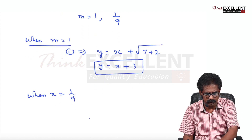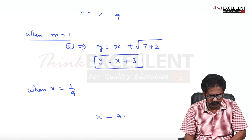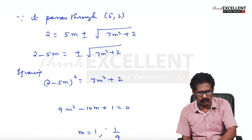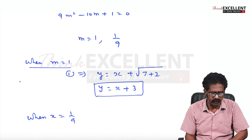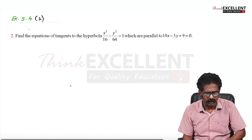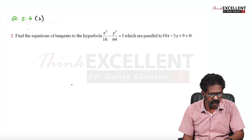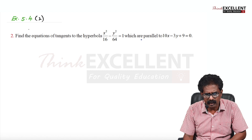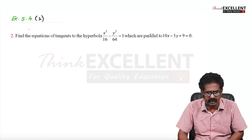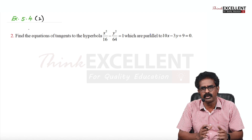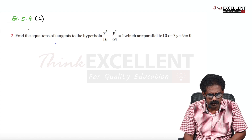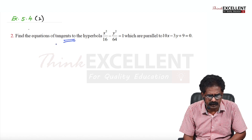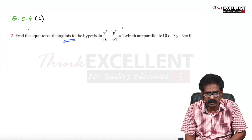For m = 1/9, substitute and complete the calculation similarly — I am giving the answer, you try to complete it. That's one answer: y = x + 3. Now look at question 2: find the equations of tangents to the hyperbola which are parallel to the given line.